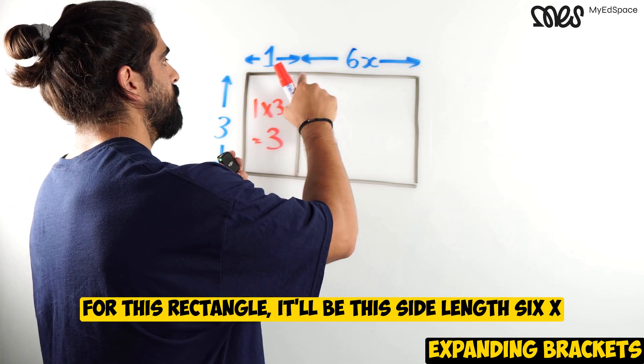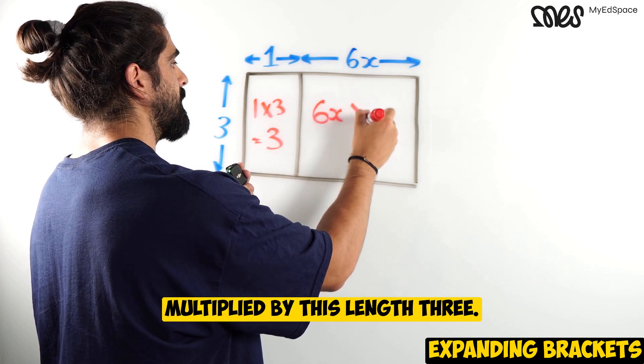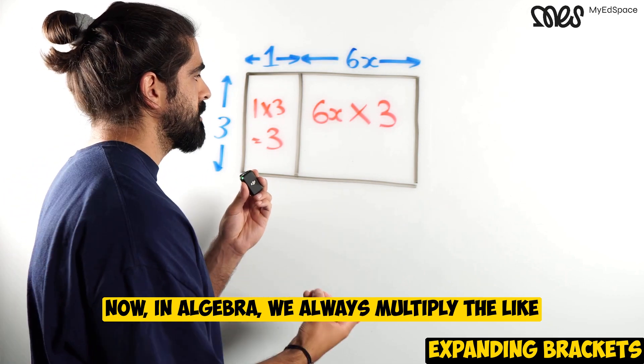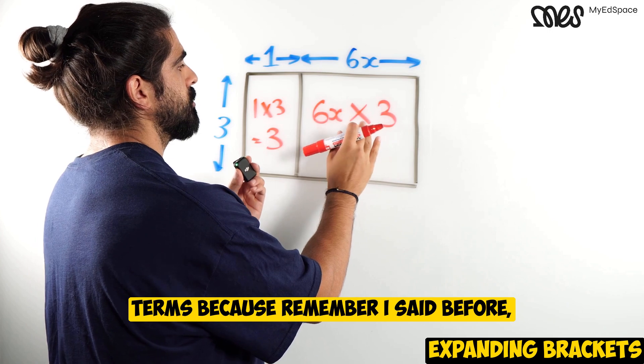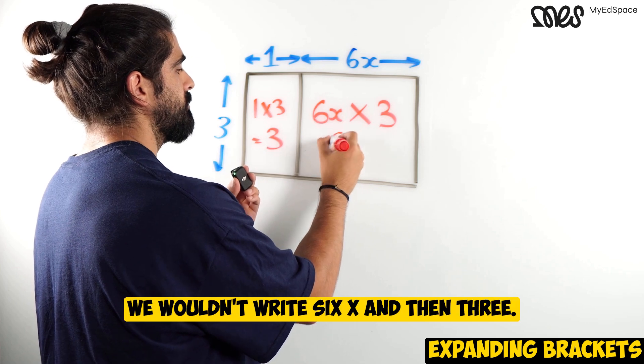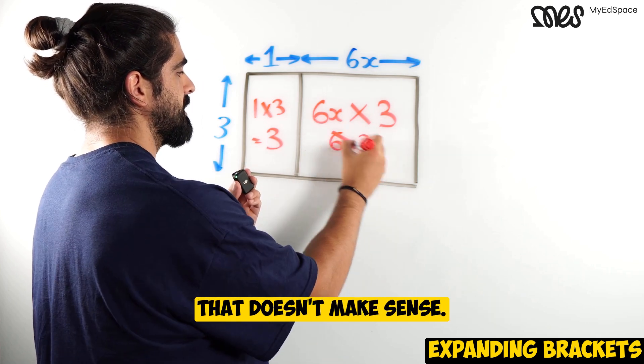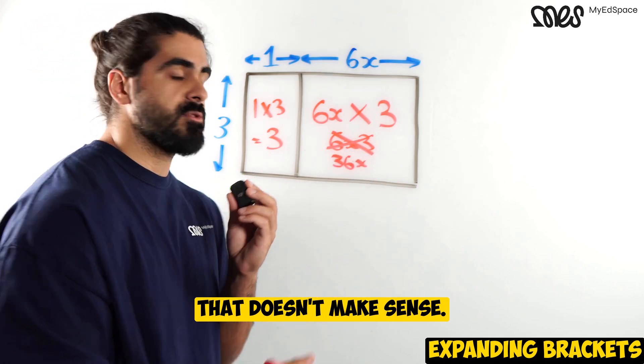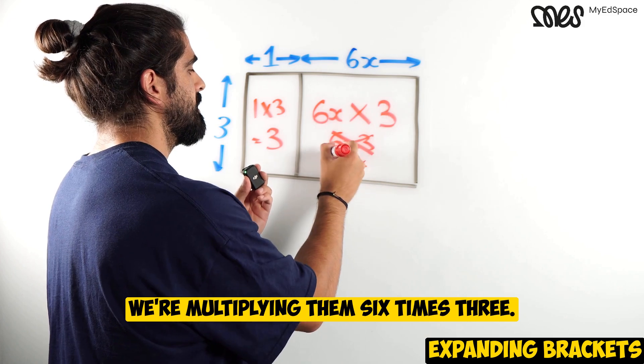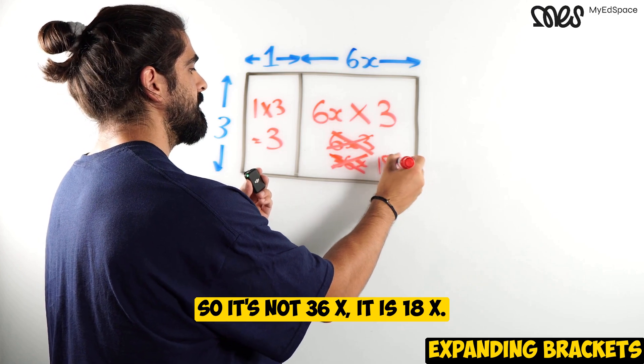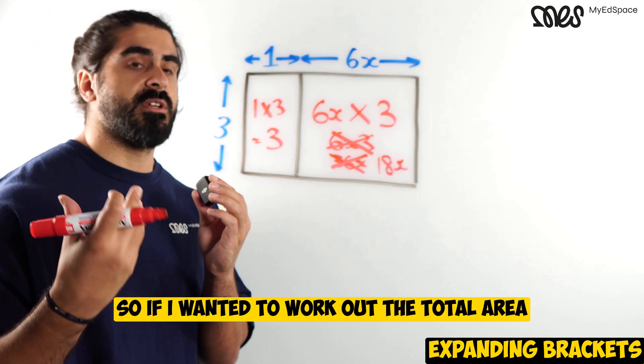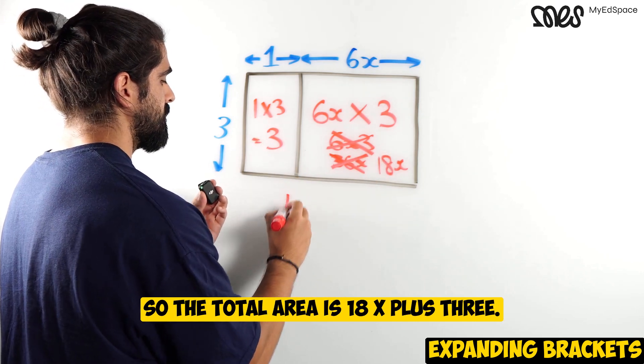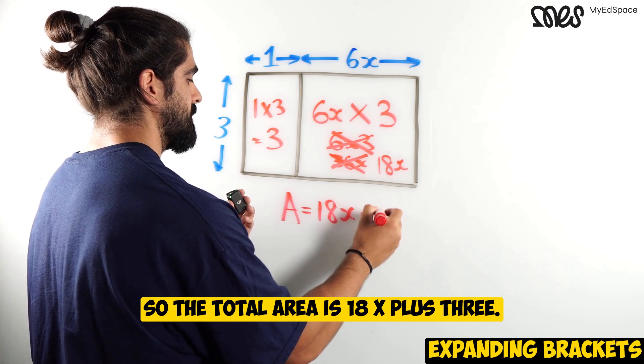For this rectangle, it will be this side length 6x multiplied by this length 3. Now, in algebra, we always multiply the like terms, because remember I said before, you don't have to write the multiplication symbol, right? But we wouldn't write this. We wouldn't write 6x and then 3. That doesn't make sense. Nor would we write the 3 in front and say 3, 6x. That doesn't make sense. We're multiplying them 6 times 3. So it's not 36x. It is 18x. So if I wanted to work out the total area of this rectangle, I would do 18x plus 3. So the total area is 18x plus 3.